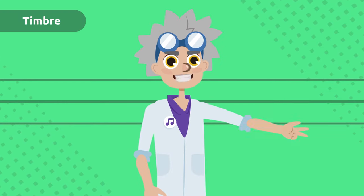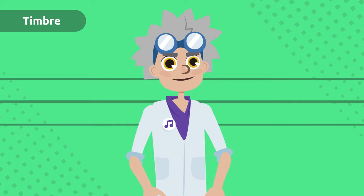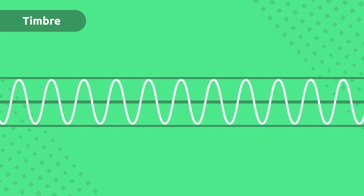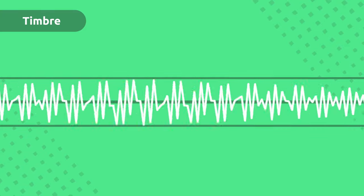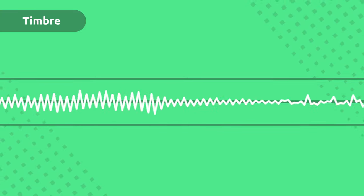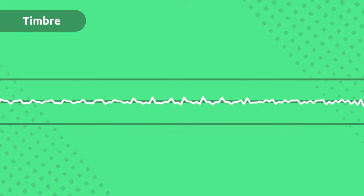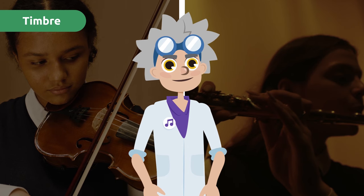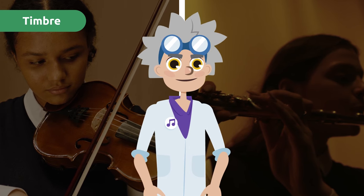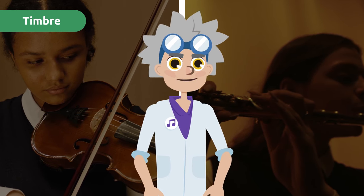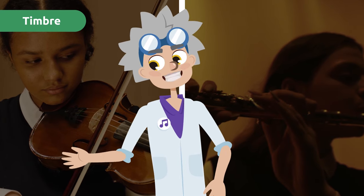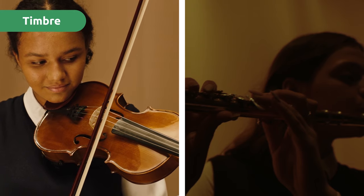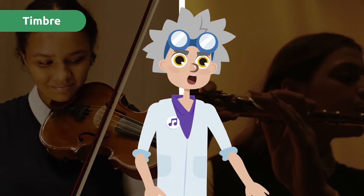The third characteristic of sound is timbre. It depends on the wave shape of the sound, and it allows us to distinguish sounds even if they have the same loudness and pitch. Timbre, for example, helps us differentiate the sound between a stringed instrument and a wind instrument.